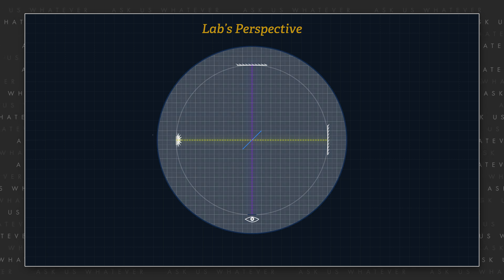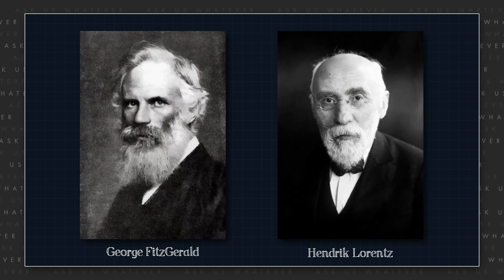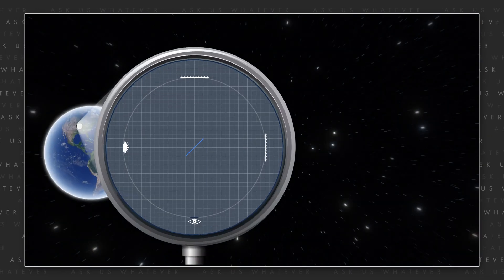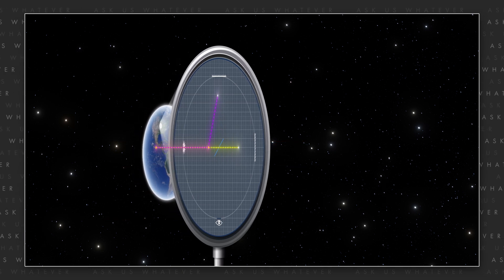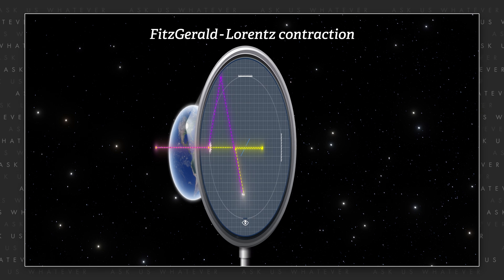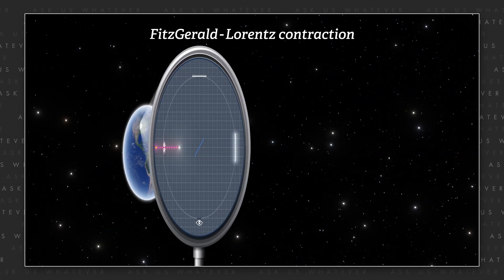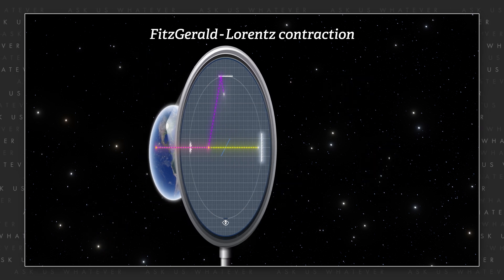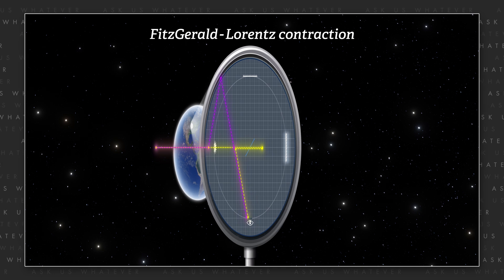In 1889, George Fitzgerald, and later in 1892, Henrik Lorentz, suggested that the null result of 1887 could be explained if distances became shorter in the direction of Earth's motion — something called the Fitzgerald-Lorentz contraction. They proposed that the longitudinal mirror was drawn closer to the origin of light due to some unknown process, and conveniently by the exact amount that light's path length would have lengthened in space due to the motion of the Earth.